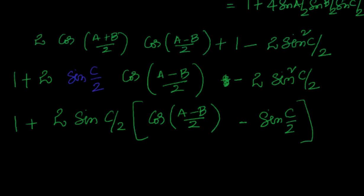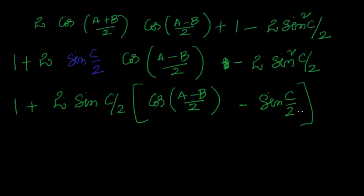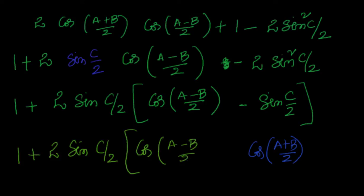So this becomes 1 plus 2 sin(c/2) into cos((a-b)/2) minus sin(c/2). Now, what is sin(c/2)? Since a + b + c = 180°, c/2 = 90° - (a+b)/2, so sin(c/2) is equal to cos((a+b)/2). So I can convert sin(c/2) back into cos((a+b)/2).